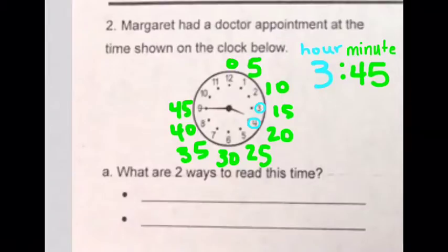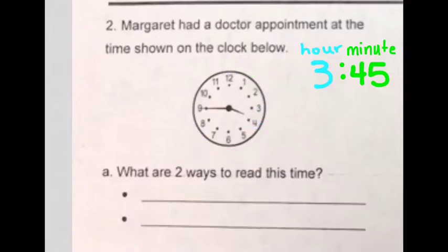So we could read it the normal way as 3:45. We could also do it as a fraction. And remember, if you do it by a fraction, you can split the clock into four equal pieces.